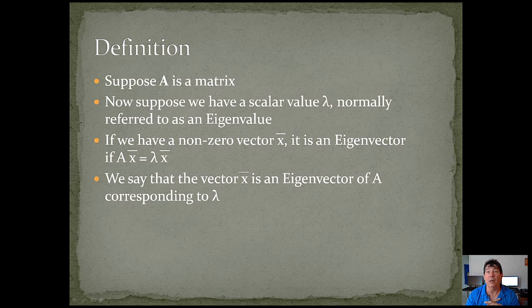So let's say we have some nonzero vector, x prime. It would be an eigenvector if A times x prime equals lambda x prime. We say that vector x prime is an eigenvector of A corresponding to lambda.